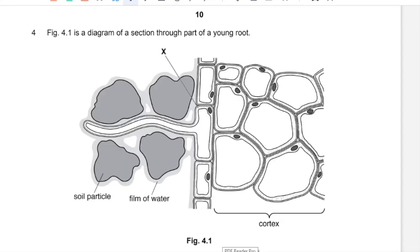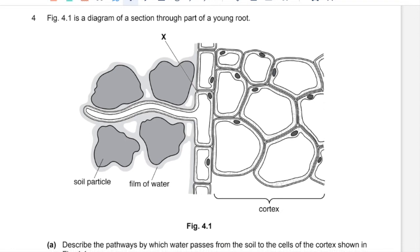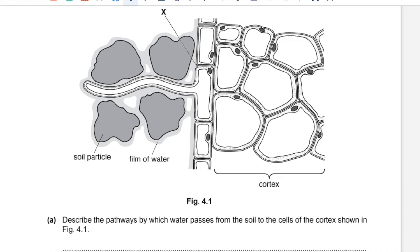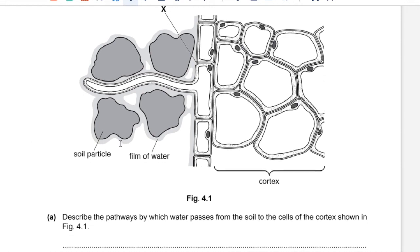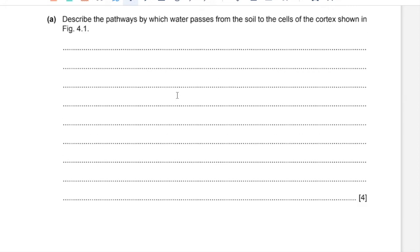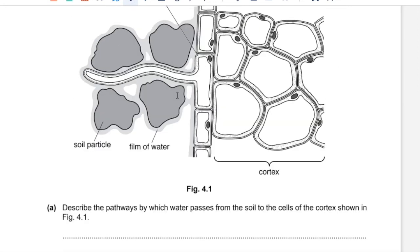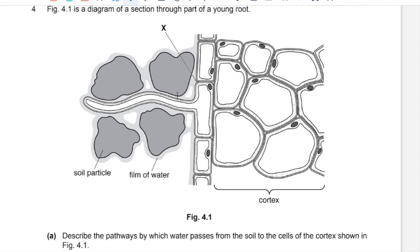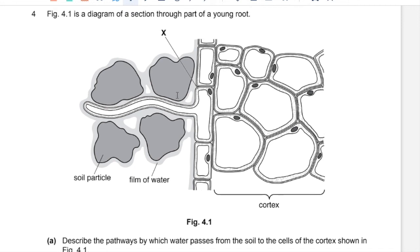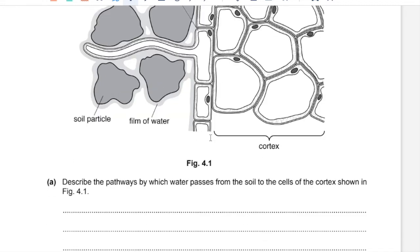Question 4. Figure 4.1 is a diagram of a section through part of a young root. Part A: Describe the pathways by which water passes from soil to the cells of the cortex. Movement of water is carried out by osmosis. This question is four marks, so you need to describe both pathways covered in the syllabus: the apoplast and symplast pathways. The apoplast pathway includes movement of water by seeping across cell walls without entering the cells, and the symplast pathway includes movement through the cytoplasm, crossing plasmodesmata.